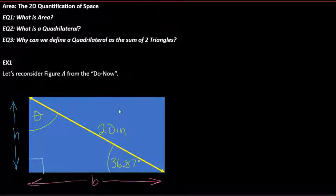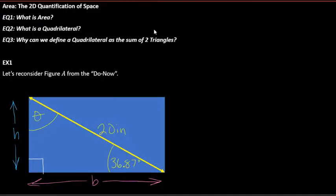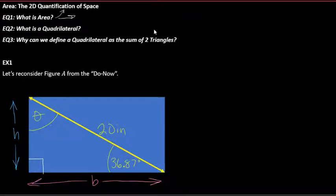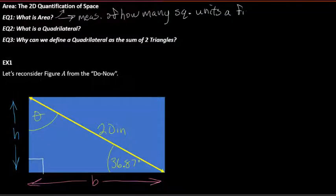What is area? I kind of give you the answer to EQ1 right here in the title of this slide. Area is the two-dimensional quantification of space. To put it simply, it's the measure of how many square units a figure is made of.